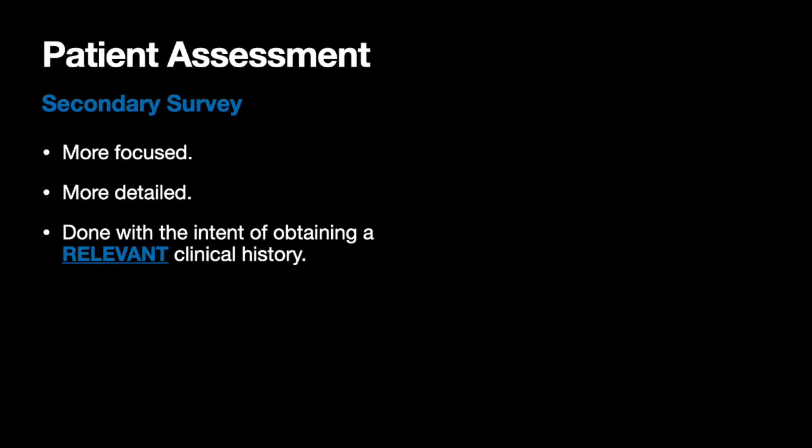ABCs and critical interventions are part of your primary survey — looking at what critical interventions need to take place with a patient immediately to sustain life for the next few minutes, and then doing those. We're not talking about primary surveys tonight; we're skimming over them fairly quickly. After your primary survey, we get to secondary surveys.